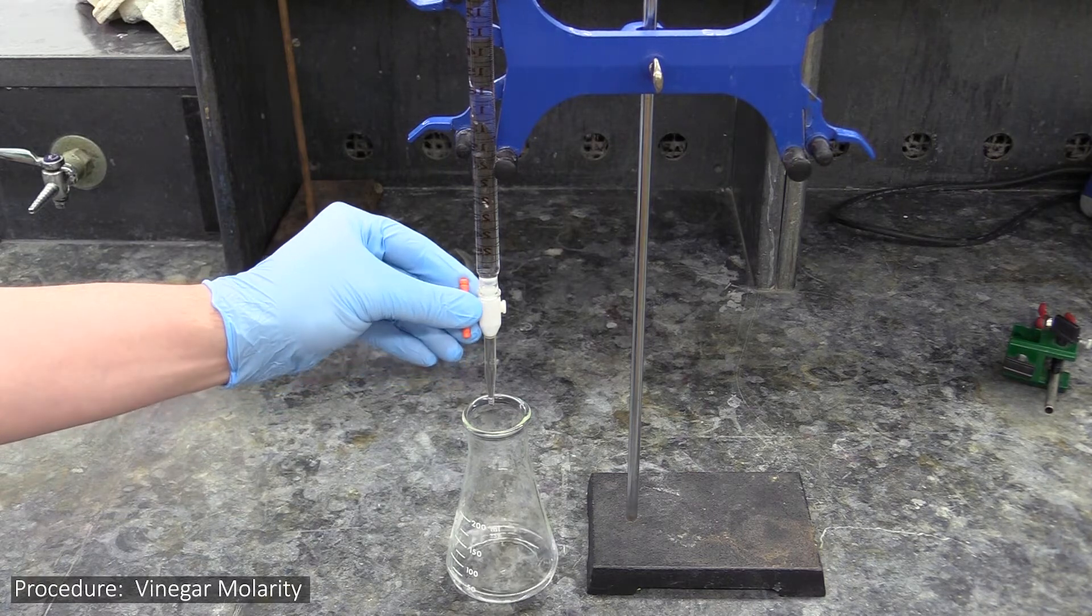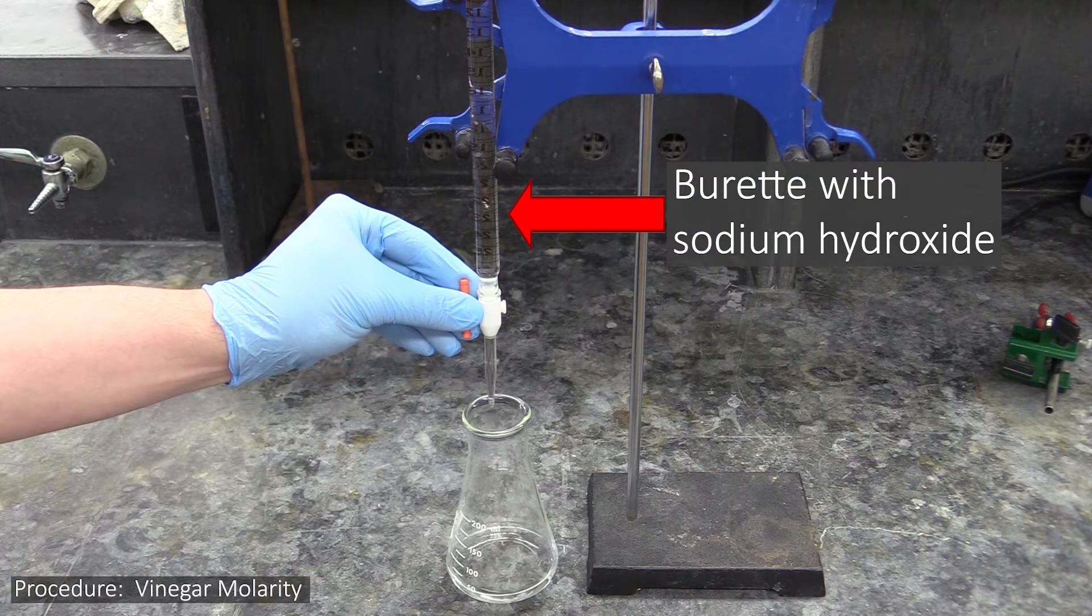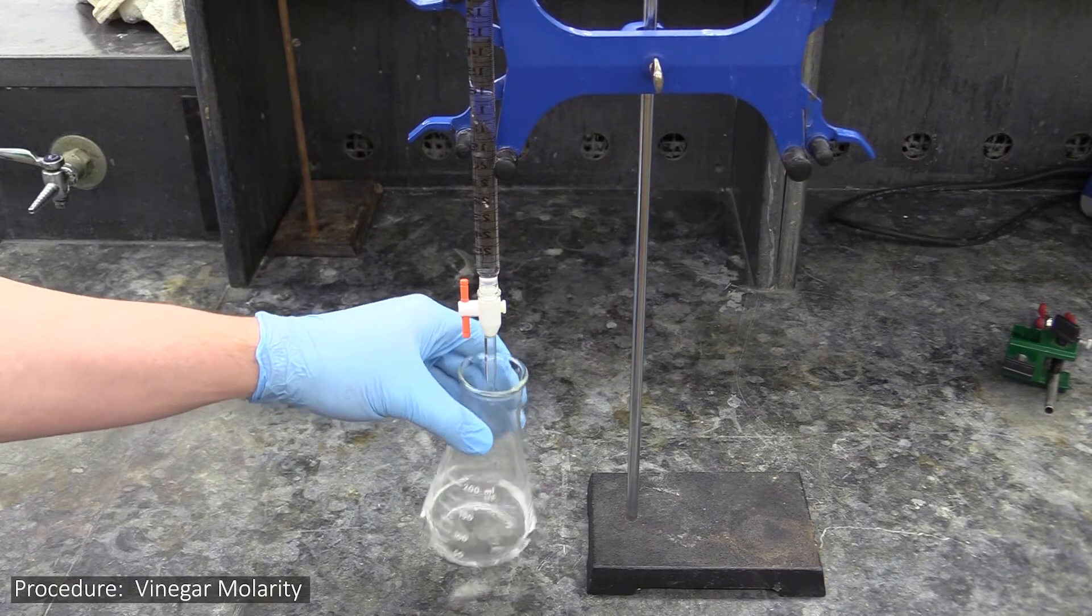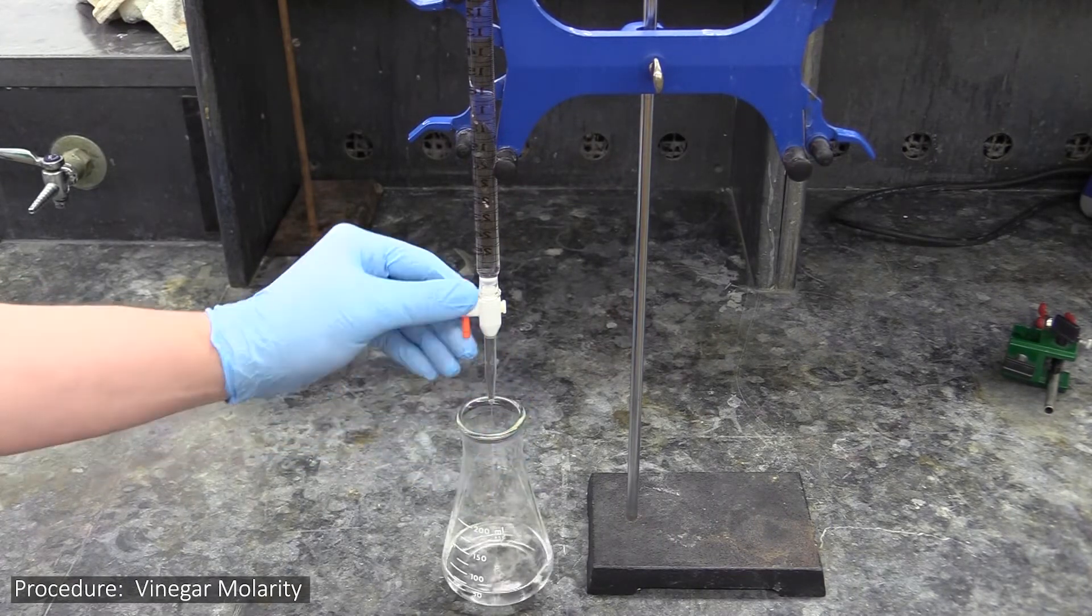For the titration itself, you'll use a burette to add sodium hydroxide to your flasks until the solution inside changes color. In case you're not familiar with using the burette, here's a few tips to help you out.